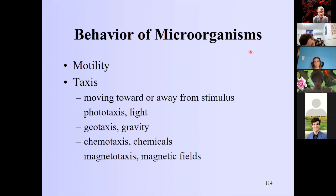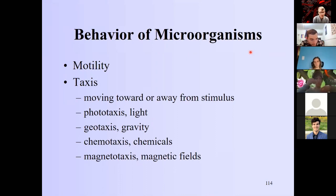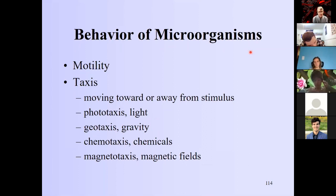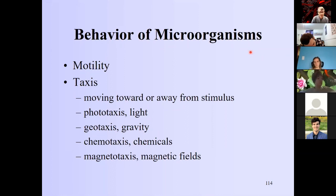With chemotaxis, you can imagine there are chemicals you want to move towards — if there's sugar and you're a yeast or bacterium that needs sugar you move toward it. If there's a predator or some nasty chemical you move away. We'll talk about how that works, and I'll go into more detail about magnetotaxis because it's kind of cool.